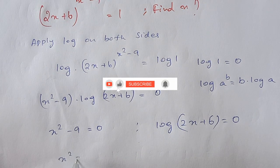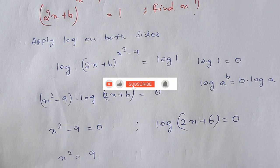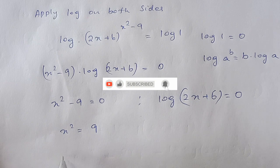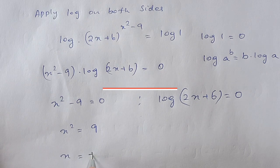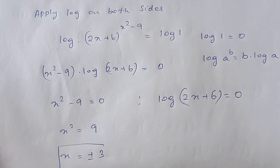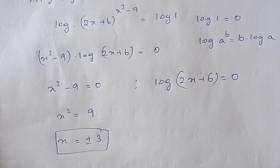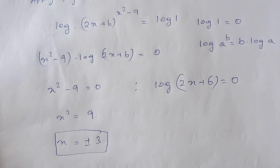From x squared minus 9 equals 0: x squared is equal to 9, so x is equal to plus or minus 3, taking square root on both sides.